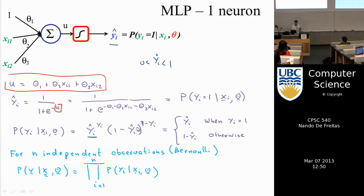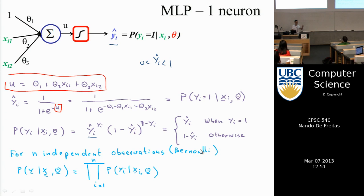When y_i equals 1, the Bernoulli expression simplifies to y-hat; when y_i equals 0, it simplifies to 1 minus y-hat. This single expression summarizes both cases. It's a well-defined model because only two things can happen — the neuron fires or doesn't — and the two probabilities sum to one, giving us a valid probabilistic model.